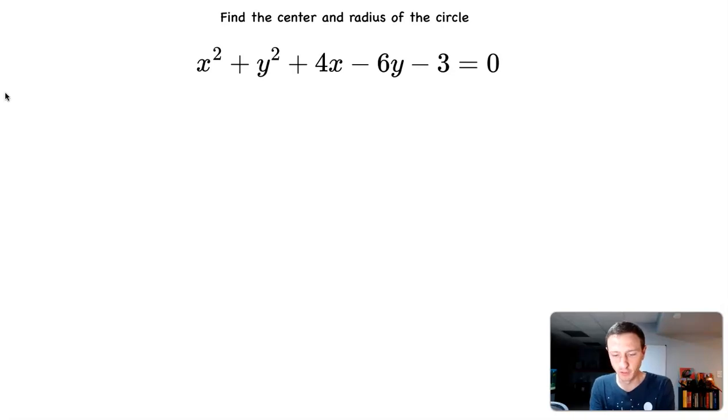So our end goal should look like this. It should be x minus h squared plus y minus k squared equals the radius squared.